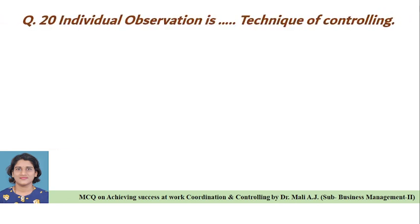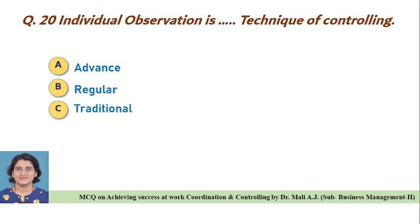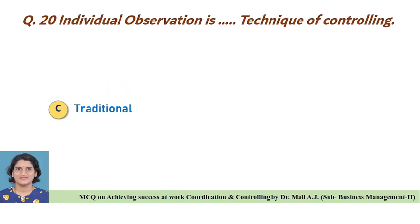Question twenty: Individual observation is dash technique of controlling — Option A: advance, Option B: regular, Option C: traditional, Option D: current. Correct answer is Option C, individual observation is a traditional technique of controlling.